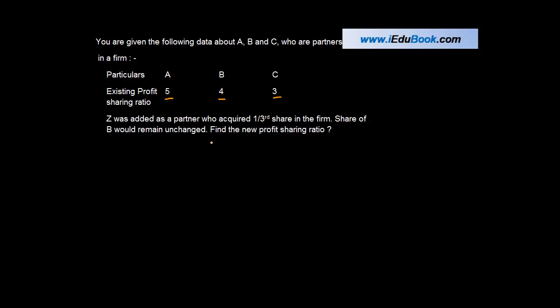You had three people A, B, and C, and their existing profit-sharing ratio is 5:4:3. The sum of these three, 5 plus 4 plus 3, gives you 12, or 5 upon 12, 4 upon 12, and 3 upon 12.